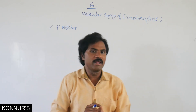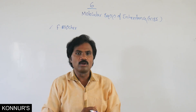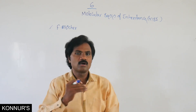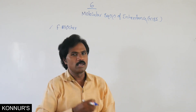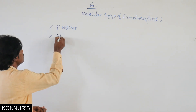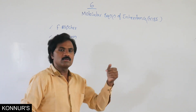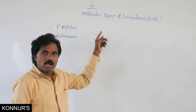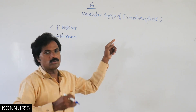In 1869, Frederick Miescher discovered these nucleic acids — that is DNA as well as RNA. The person who coined the word 'nucleic' was Altman. Why? Because Frederick Miescher identified nucleic acid in pus cells, that means white blood cells.